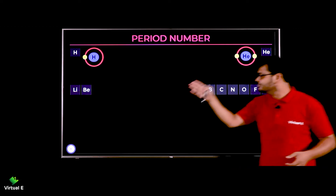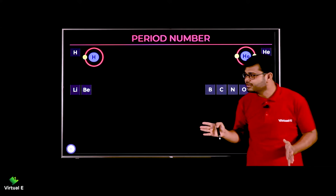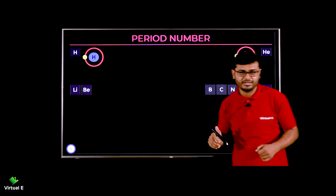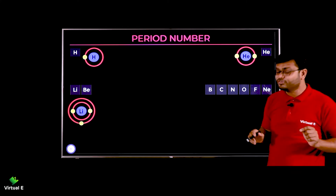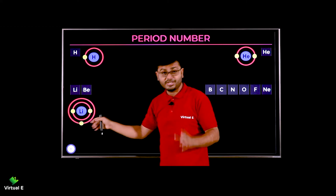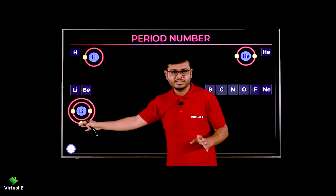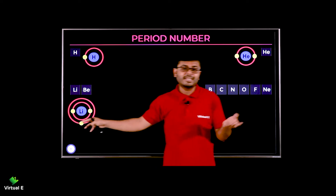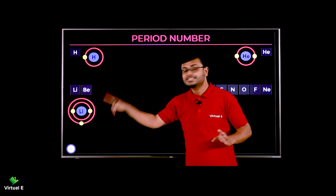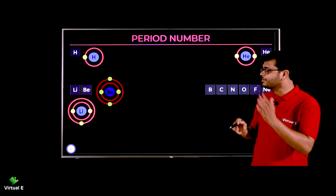Let's talk about the second period now. We have lithium, beryllium, boron, carbon, nitrogen, oxygen, fluorine, and neon — eight elements. Let's see the electron structure of lithium. Lithium has three electrons. The first shell takes two, and the third electron needs a second shell, so it belongs to the second period and has two shells.